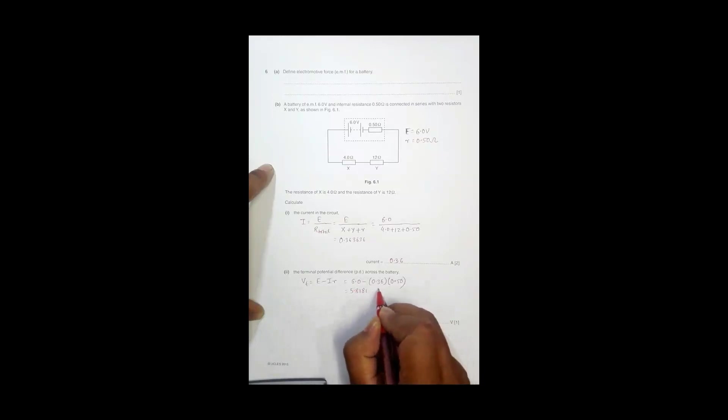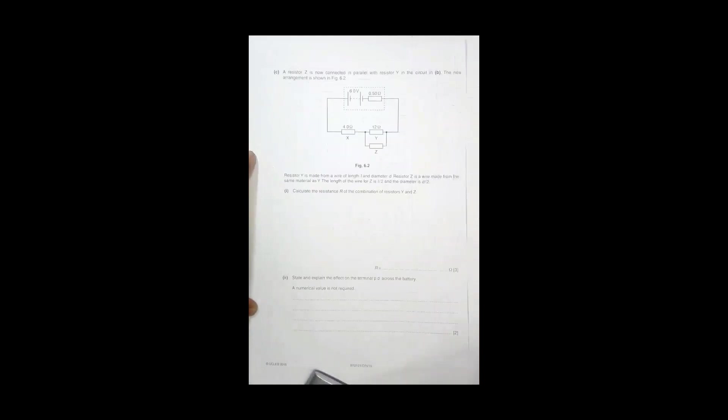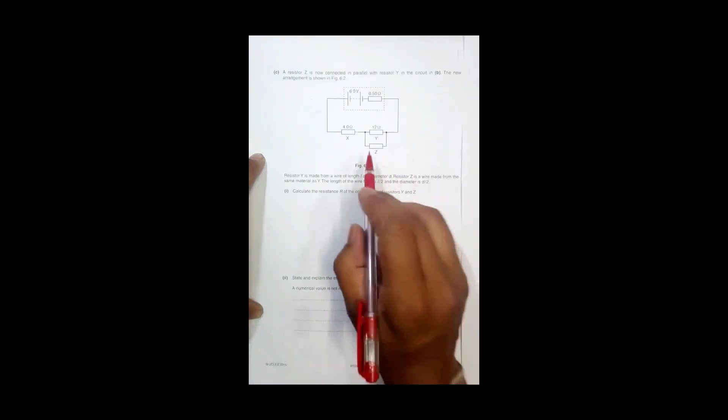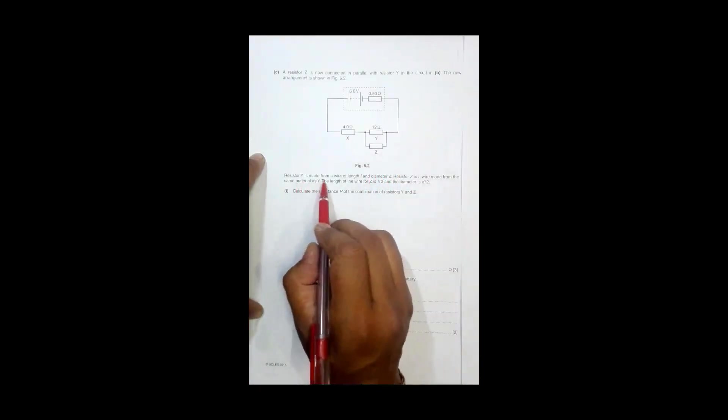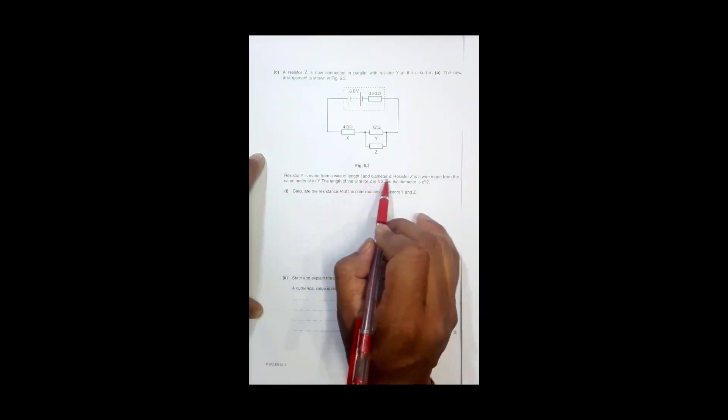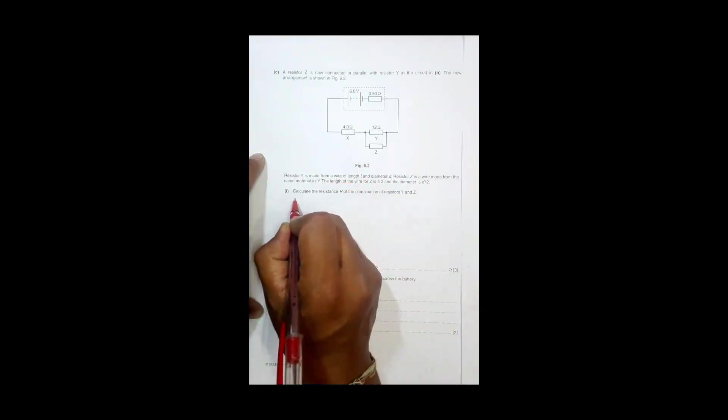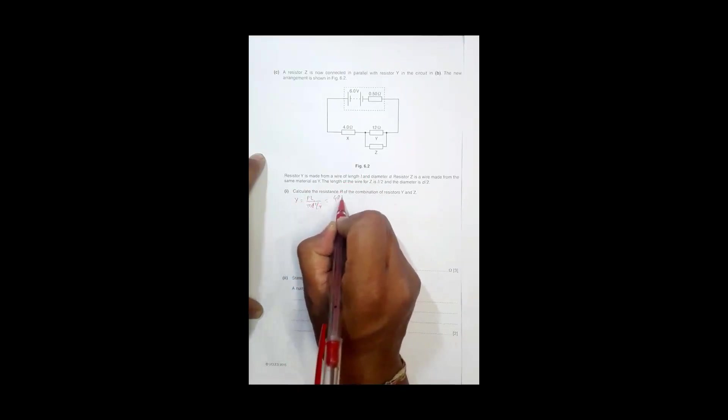Now the next question is a resistor Z is now added in parallel to Y. So previously there was Y only, now we have Z. And this Y is made of wire of length l and diameter d, so that means resistance Y is equal to rho l by pi d square by 4, and that becomes equal to 4 rho l by pi d square.